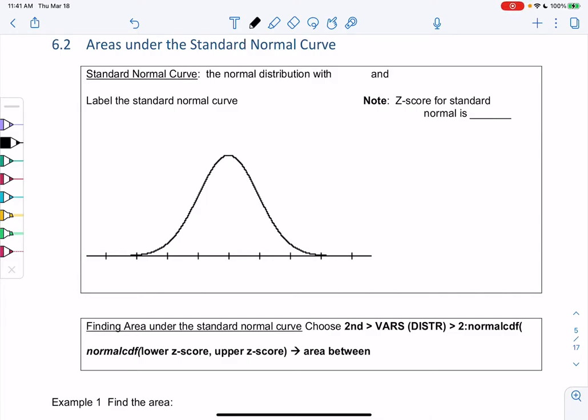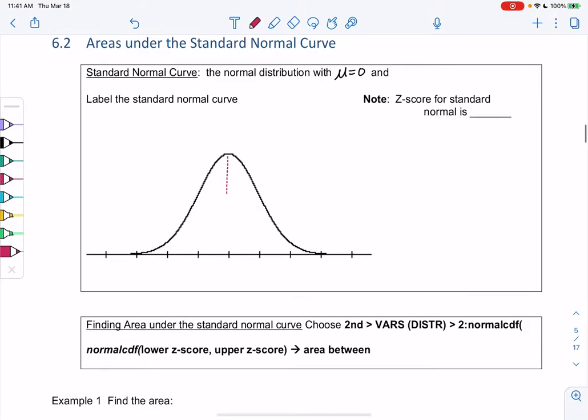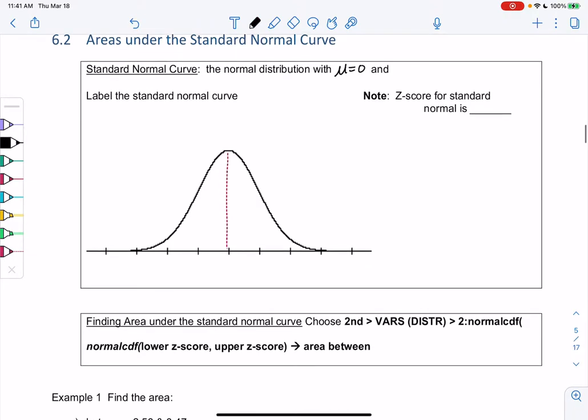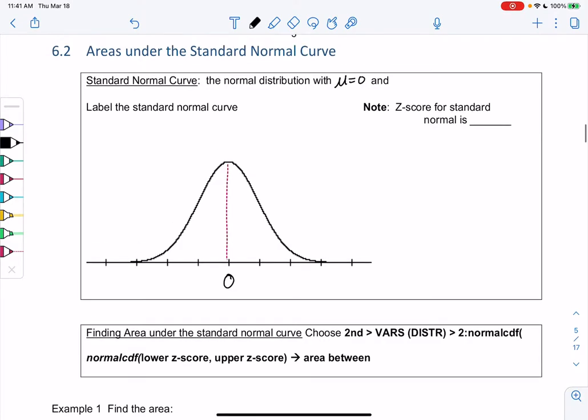Section 6.2, areas under the standard normal curve. So the standard normal curve is a special normal curve where the mean, or mu, is always 0. So if we think about that curve we've been looking at, 0 is in the middle. And it has a standard deviation, or sigma, of 1. So this is the definition of standard normal.